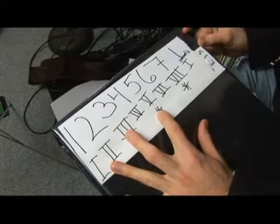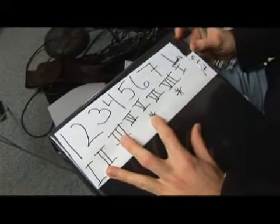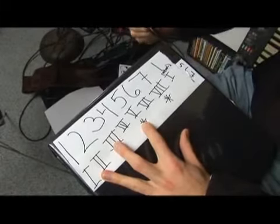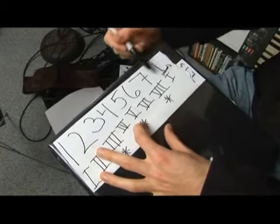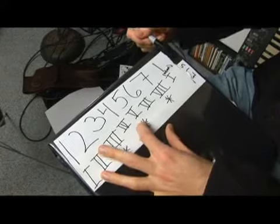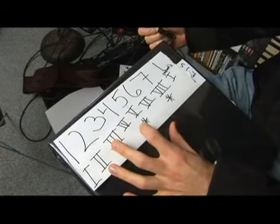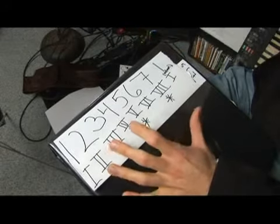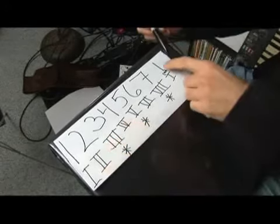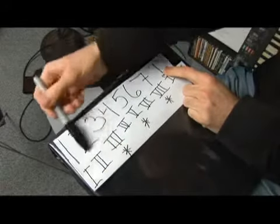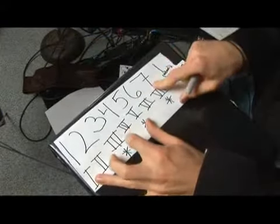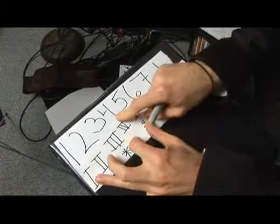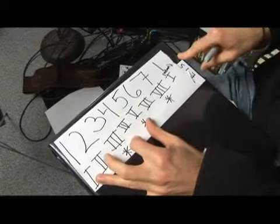We talked about using the nine as an upper tension on a dominant chord, which is the two above the octave — seven, eight, nine. Now we're going to go a step further and use the eleven, which, since eight is the same as one, nine, ten — eleven would be the same as four. So essentially it's a dominant seven chord, but we're going to add the four in here, an octave up.